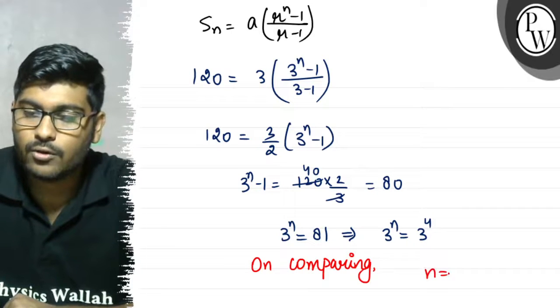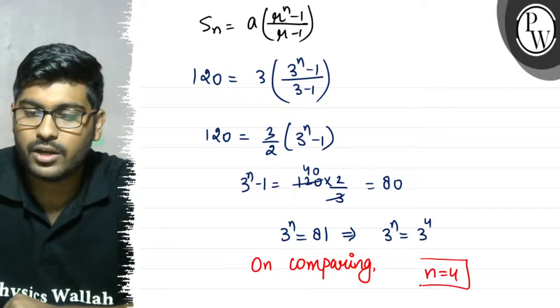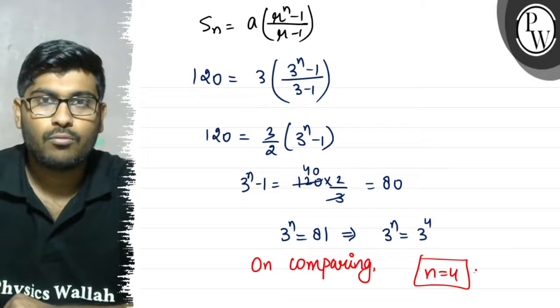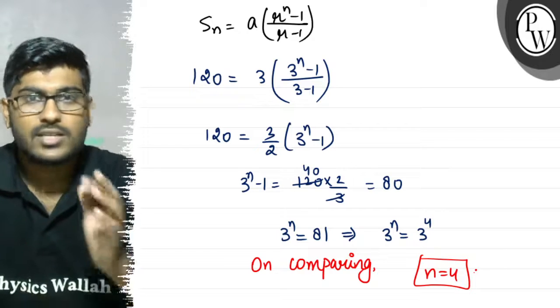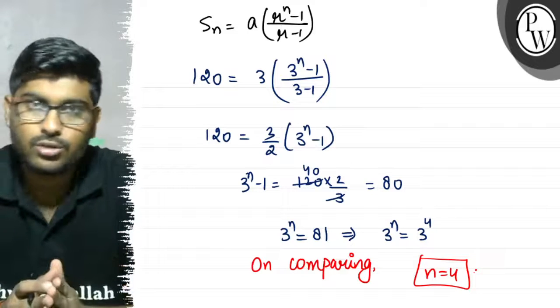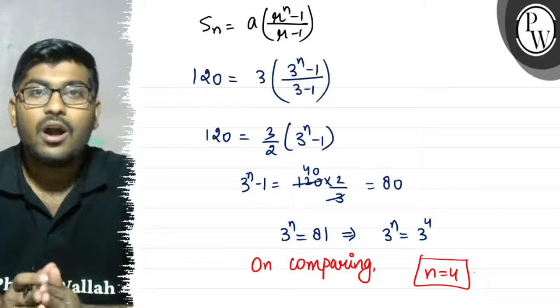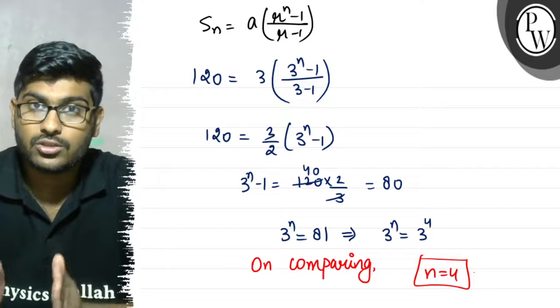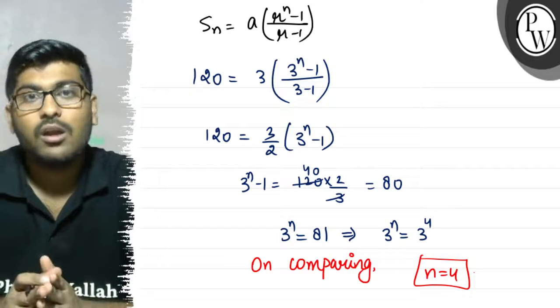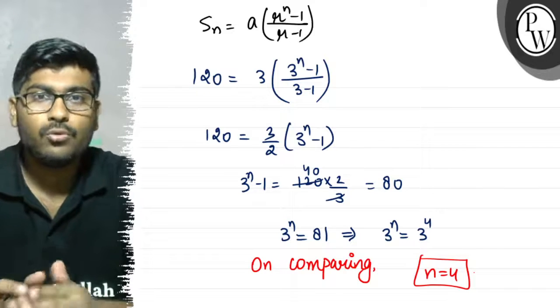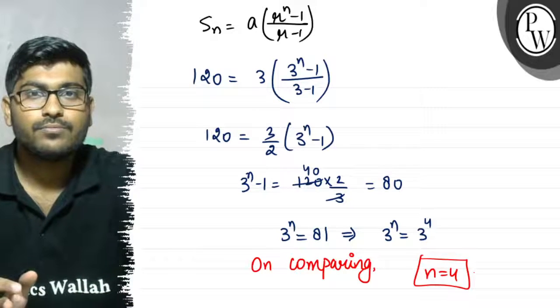Comparing, the value of n comes out to be 4. So this is the explanation to this question. I hope you understood the explanation. Thank you.